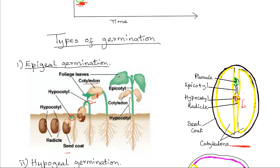Epigeal germination occurs in plants such as the common bean (Phaseolus vulgaris) and the sunflower. What brings about epigeal germination is the rapid elongation of the hypocotyl, which pushes all structures above it — the cotyledons, the epicotyl, and the plumule — out of the soil.